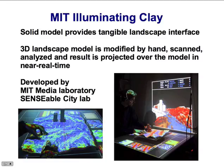The model is continuously scanned. A digital elevation model is created after each scan and topographic parameters are computed — for example, slope, profiles, flow direction, and other parameters needed for additional design. Here you can see addition of buildings and computation of aspect, along with projecting the results of analysis on the three-dimensional model. The results can also be projected on the screen and analyzed in perspective using traditional three-dimensional visualization.